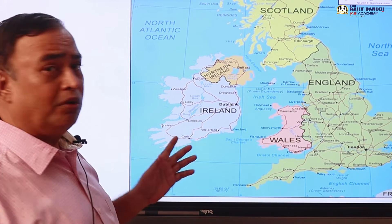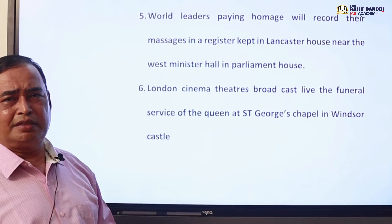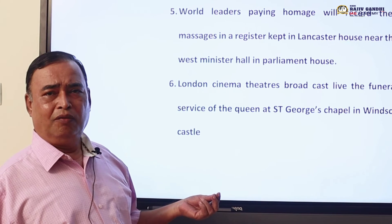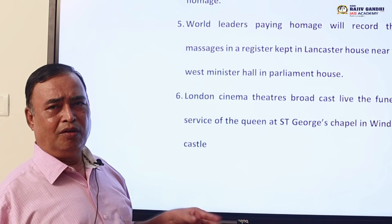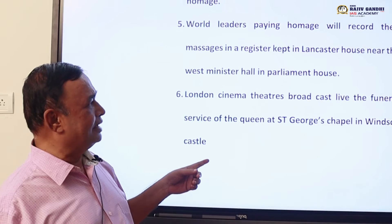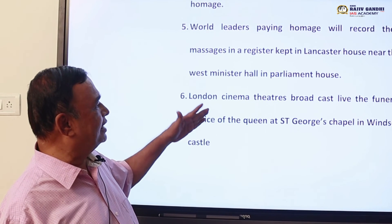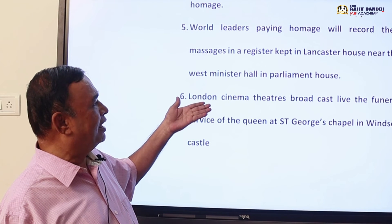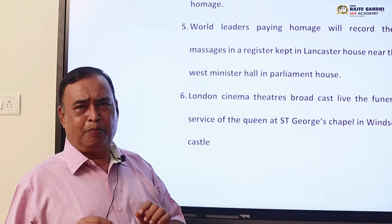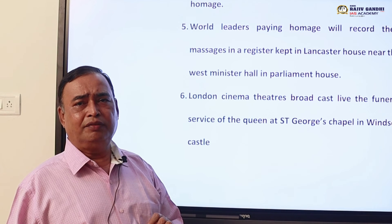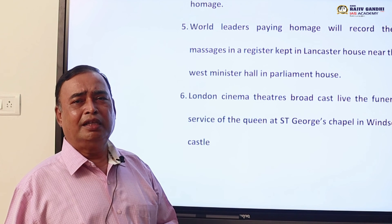You have to know one more term — that is Downs. Dear IAS aspirants, I have prepared this video from the UPSC angle. There is a greater possibility of asking questions from the map and also from the incidents and places I have mentioned. There is a possibility of asking what the name of the parliament house is, and what the name of the official residence in London is. Kindly prepare more related to the death of Queen Elizabeth II. There are also some points regarding the Kohinoor diamond that was taken from India.